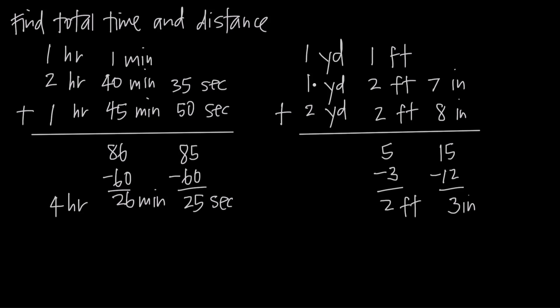Then we add yards: 1 plus 1 plus 2 is 4 yards. So the total distance is 4 yards, 2 feet, and 3 inches. That's how you deal with addition of mixed measures.